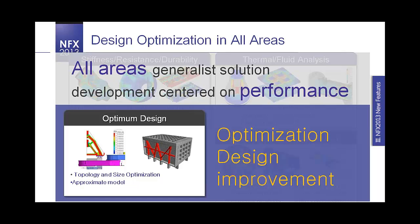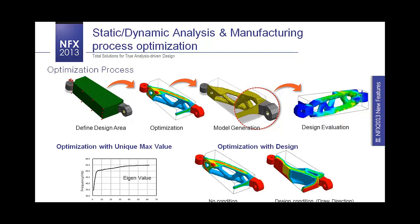Topology optimization works by defining a design area on your model. The software calculates the material density required at each area depending on load, boundary conditions, and your requirements, then helps generate a new model and mesh it automatically for testing in NFX. You can also add design condition constraints to the optimization. Piotr will now demonstrate this directly in NFX.